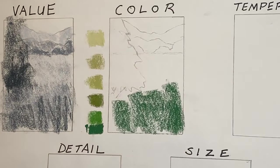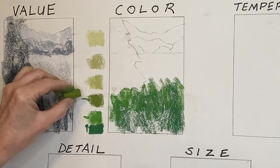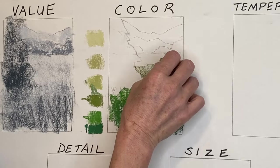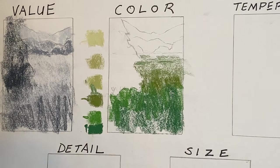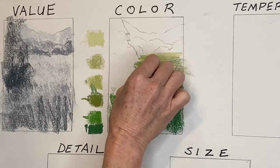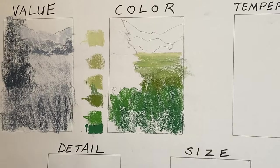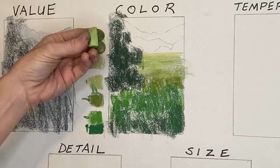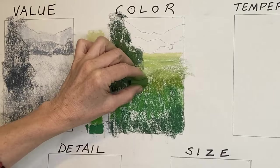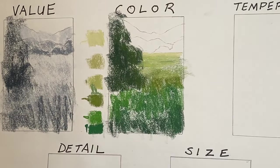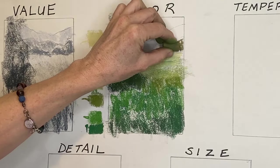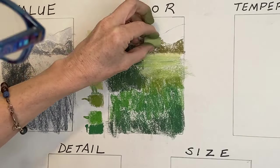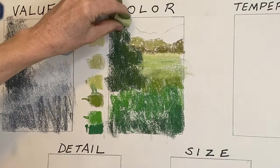I ended up finding some brighter, higher-chroma greens and added them. To keep it simple, just think about the color losing its punch — it's not going to be as intensified and strong. This can happen as the value gets lighter — a tint with white added — or because of neutralizing the color. This is all happening because of atmospheric perspective: there's more air between us and objects far in the distance, so it acts as a filter and doesn't allow us to see color as intensely or value as dark.